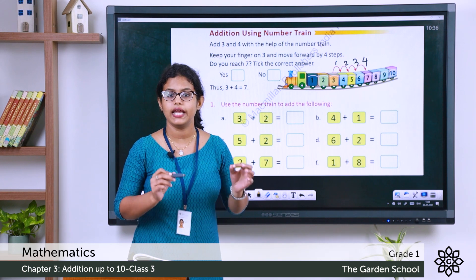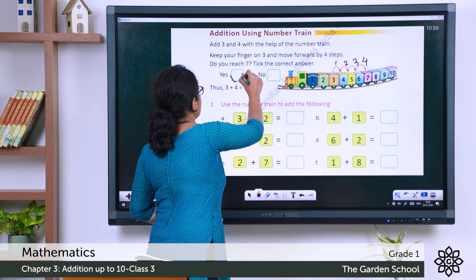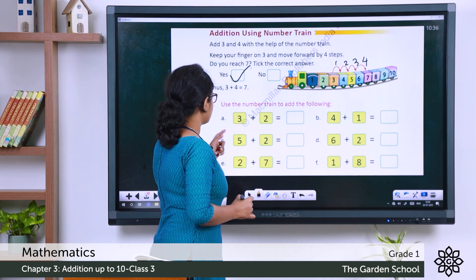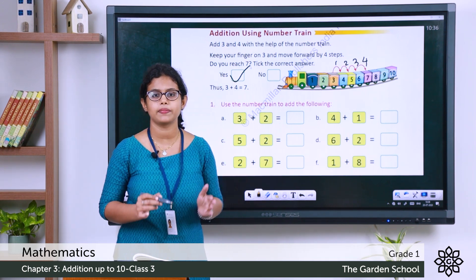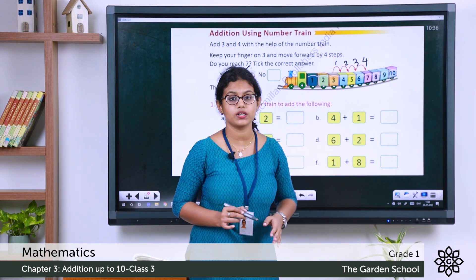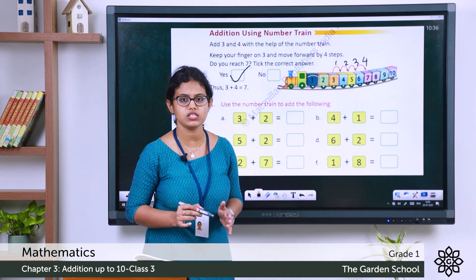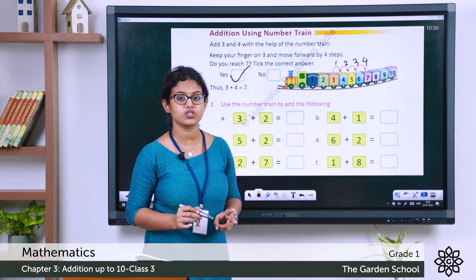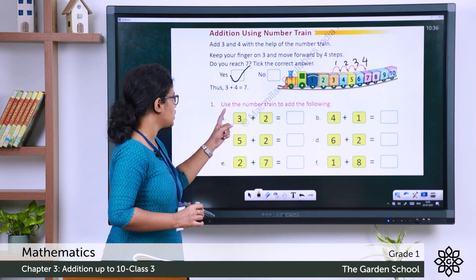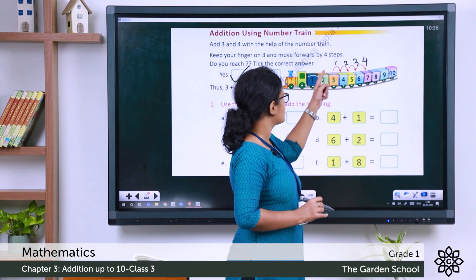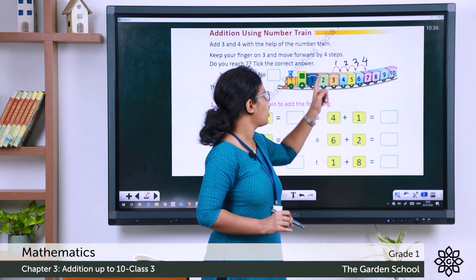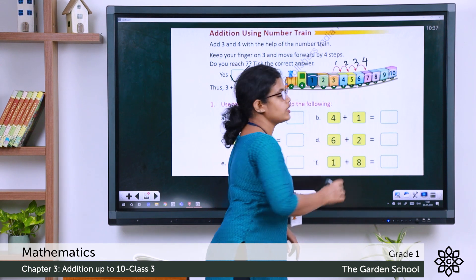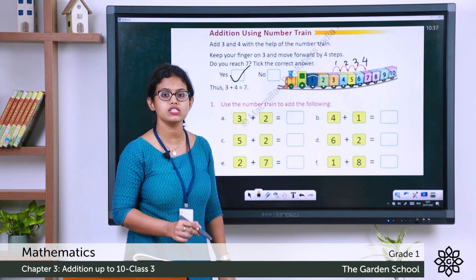Let's do an exercise using the number train. First: 3 plus 2. Keep your finger on number 3, then move 2 steps forward — 3 to 4 (1), 4 to 5 (2). We reached number 5. So the answer is 5.